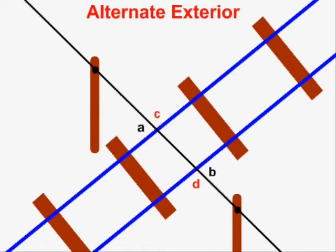Angles A and B have to have the same measure. Alternate exterior angles always have the same measure. And therefore, angles C and D also have the same measure.